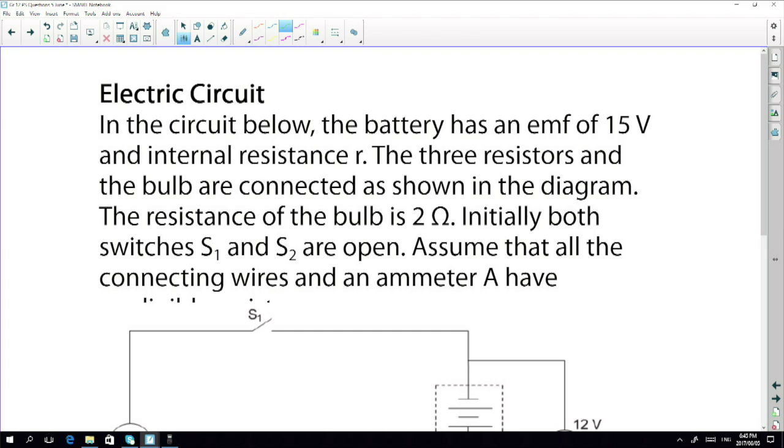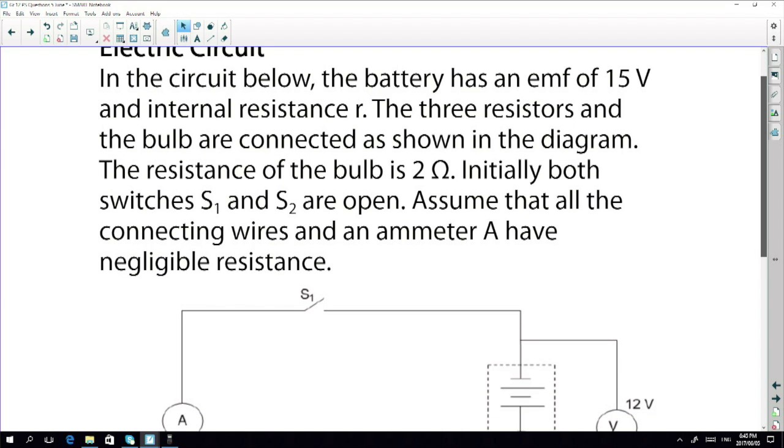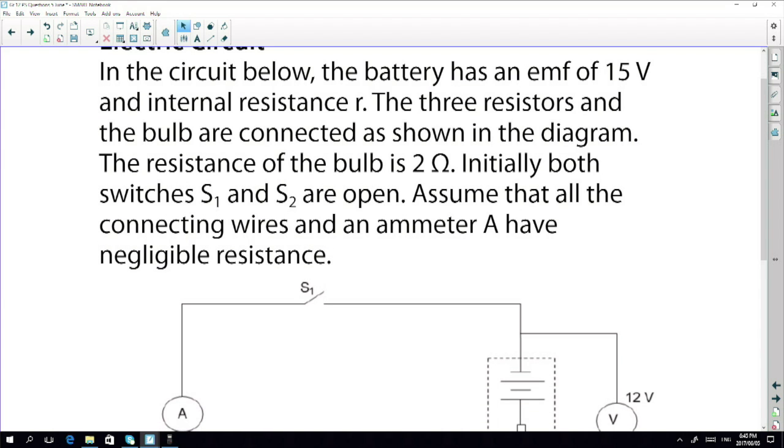So that brings us to the exam question. I'm hoping you guys have tried it. So let's do the exam question. You ready? All right, let's go. So my favourite section. We have a circuit. In the circuit below, the battery has an EMF of 15. Actually it has an EMF of 12. We're going to go back to 12. We're going to leave with the circuit. And an internal resistor R.